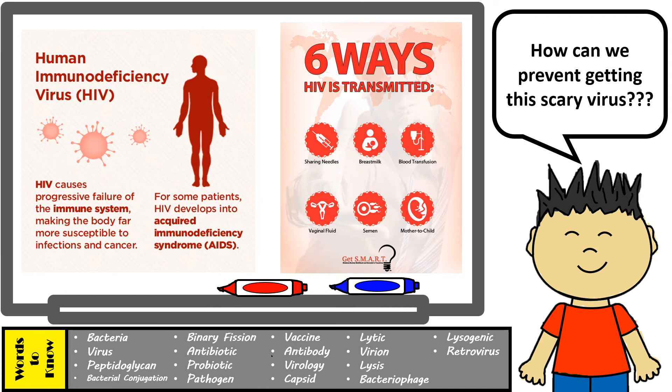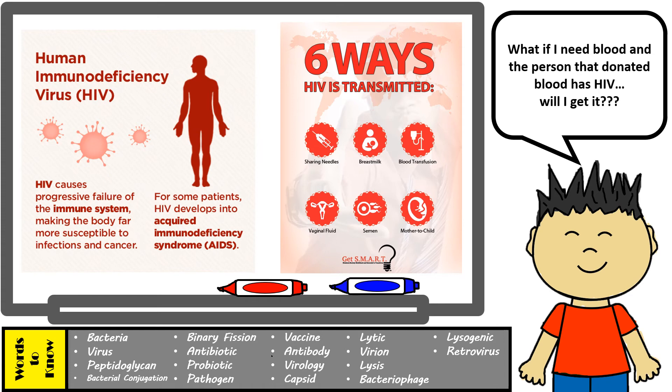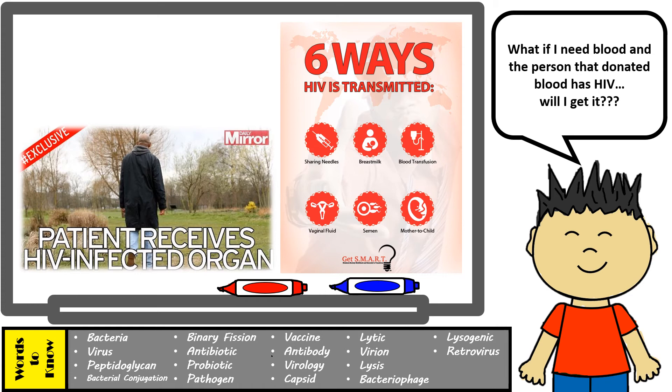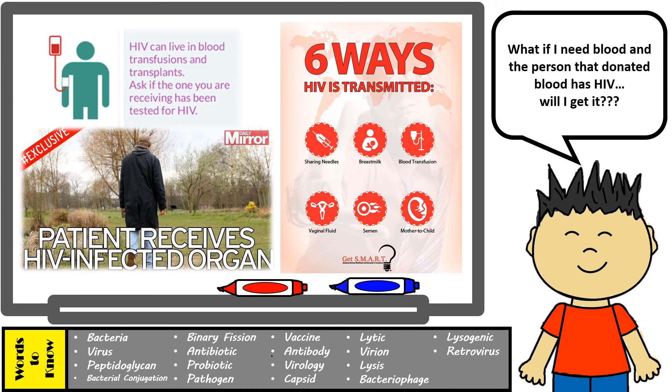HIV is transmitted through bodily fluids such as blood, semen, breast milk, etc., which means that HIV can be sexually transmitted, by sharing needles, or even from a mother to a child during pregnancy, childbirth, or while breastfeeding. In the past, patients would receive blood transfusions or organ transplants from individuals with HIV and unfortunately get HIV as well. But now, things have changed in the United States — donated blood, organs, and tissues are carefully tested before being used on patients, which has decreased that risk significantly.